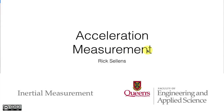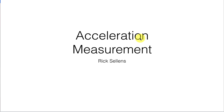We can start at the other end of the mechanical chain by measuring acceleration and integrating to get velocity and position, instead of measuring position and taking derivatives to get velocity and acceleration. Now how can we measure acceleration? It's going to definitely involve our understanding of F equals ma.